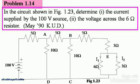Namaste students, let's look at another problem with regards to series parallel circuits. Problem 1.14: In the circuit shown in figure 1.23, determine the current supplied by the 100 volt source and the voltage across the 6 ohm resistor. It's a two-part problem asked in the KUD paper of May 1990.